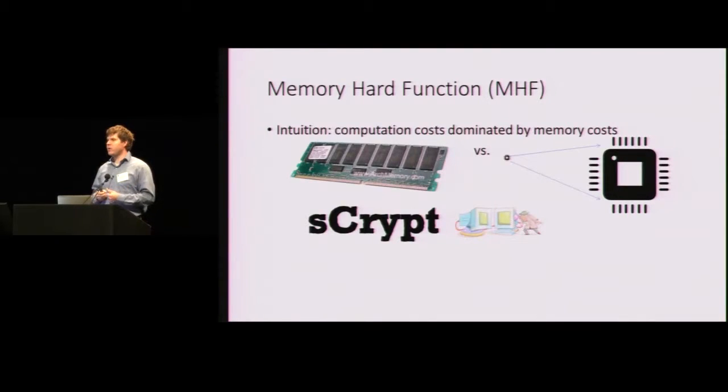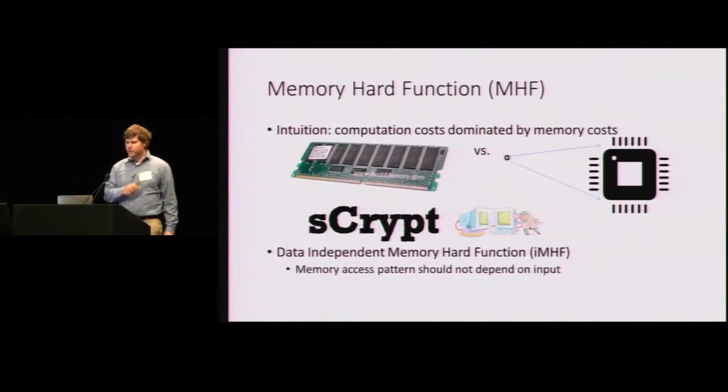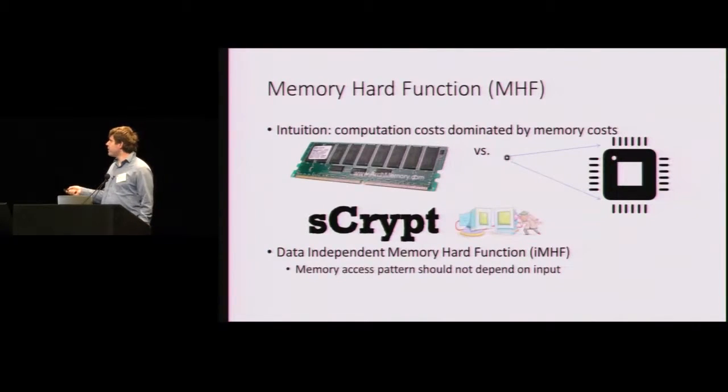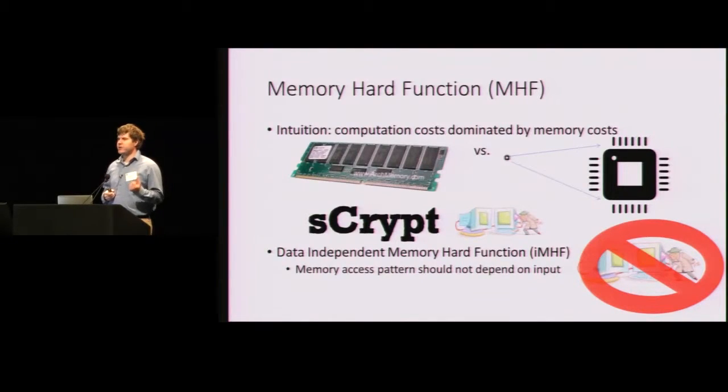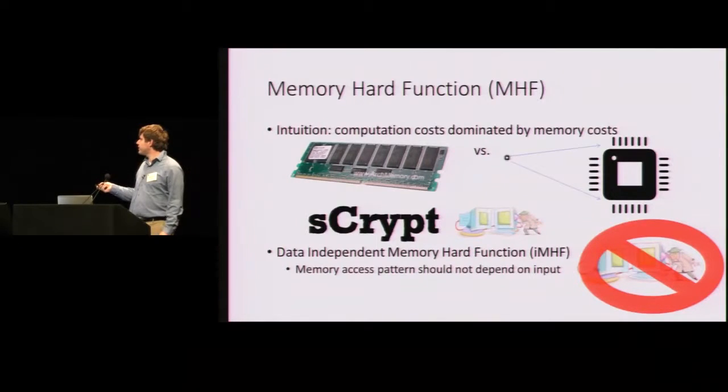Why is this a problem? Well, it means that potentially the password is vulnerable to side channel attacks. For example, cache timing attacks. So a data independent memory hard function is simply a memory hard function whose memory access pattern does not depend on the secret user input. And in this case, if we adopt a data independent memory hard function, then we don't have to worry about these side channel attacks.